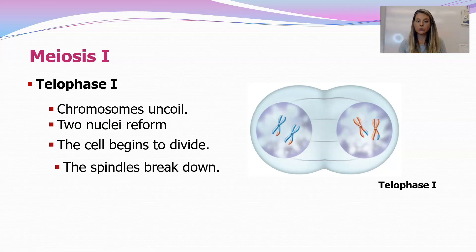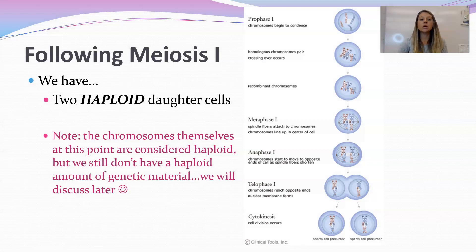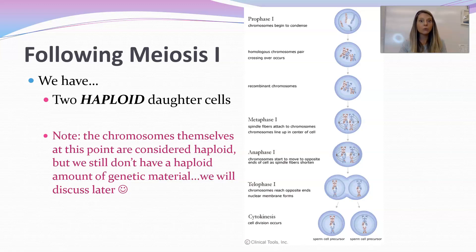In telophase I, similar to telophase of mitosis, the chromosomes uncoil, two nuclei reform, the cell begins to divide, and the spindle fibers break down. Some cells will go through cytokinesis here, but others jump right into prophase II of meiosis II. At this point, following meiosis I, we have two haploid daughter cells. The chromosomes themselves are considered haploid, but we don't really have a haploid amount of genetic information yet — we have to divide the cells one more time to end up with a true haploid amount of genetic information in the final cells.